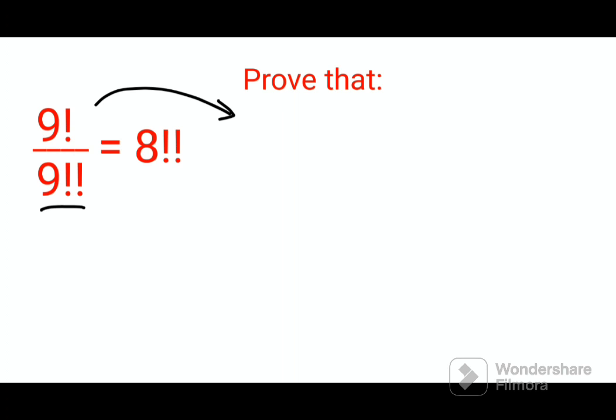So before going ahead with that, I would like to first do what is 9 factorial. 9 factorial is multiplying 9 with the numbers in decreasing order up to 1. So then we have 4, 3, 2 and 1.